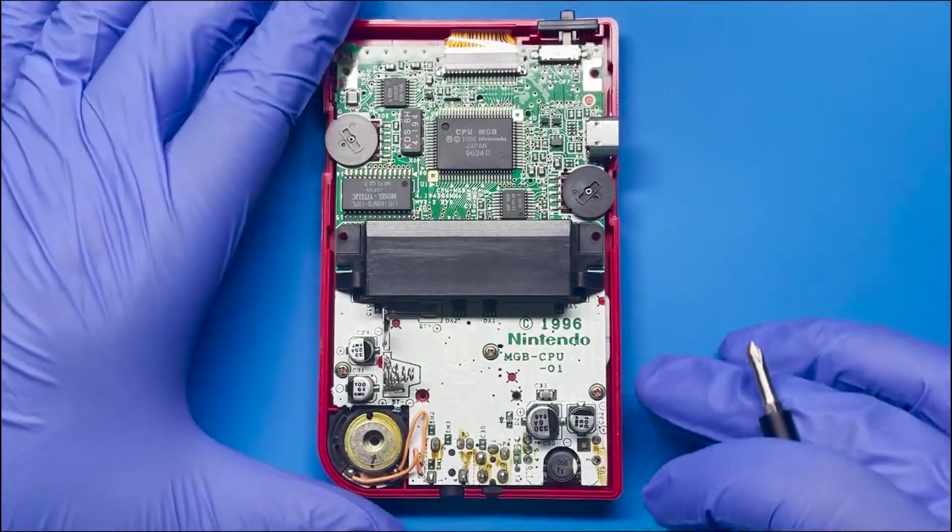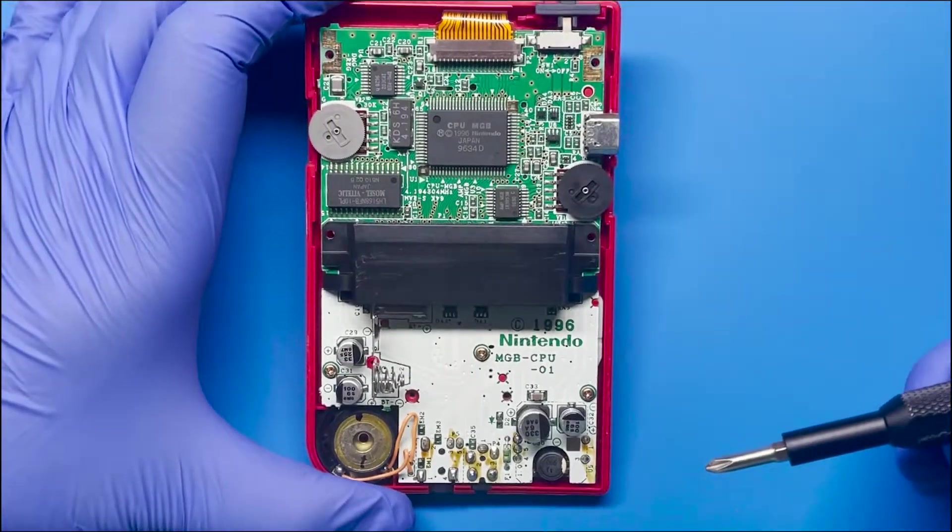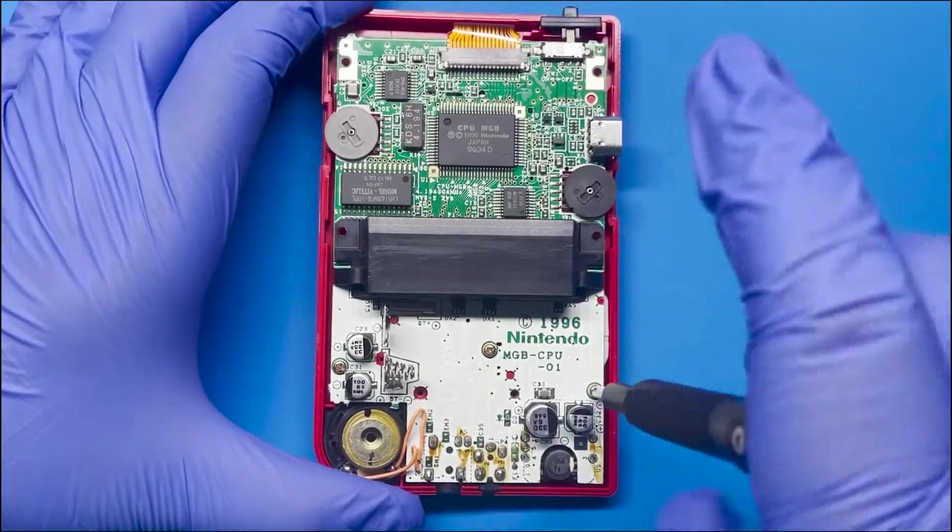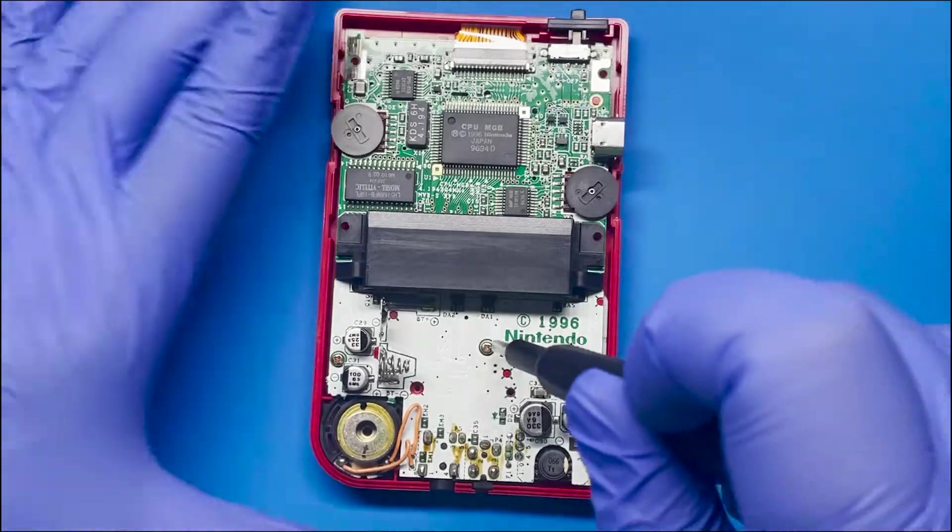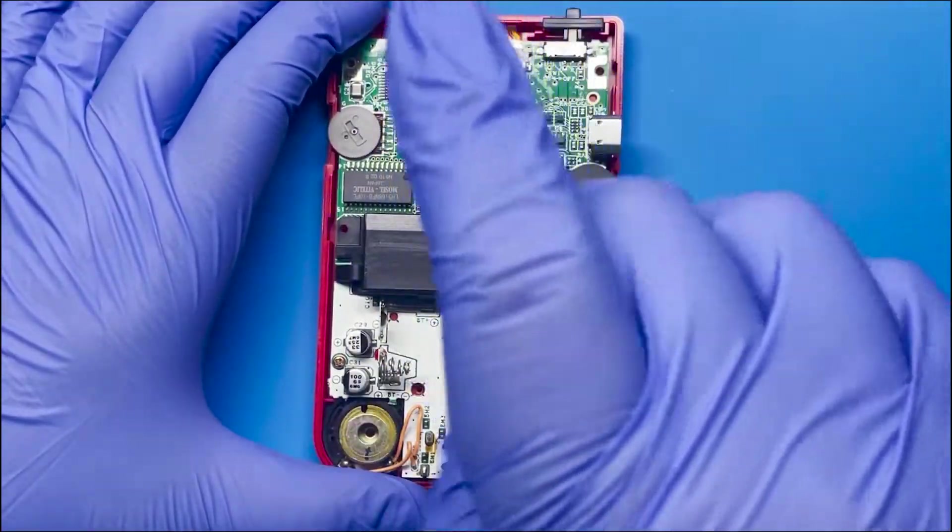So just by looking at it, I don't think I have to do a lot of cleaning on here. Everything looks very clean for some reason. We're going to want to inspect the front side and just make sure that everything's clean there too. So we'll remove these screws from the motherboard so we can reveal what's on the front side of the board.